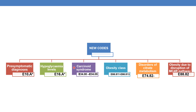Next is carcinoid syndrome, given by the code set E34.002 and E34.09. The next is obesity class, given by the code set E66.8112 and E66.813. New codes have also been added in disorders of citrate metabolism under E74.82, which is further expandable. The final code added is E88.82 for obesity due to disruption of the MC4R pathway.